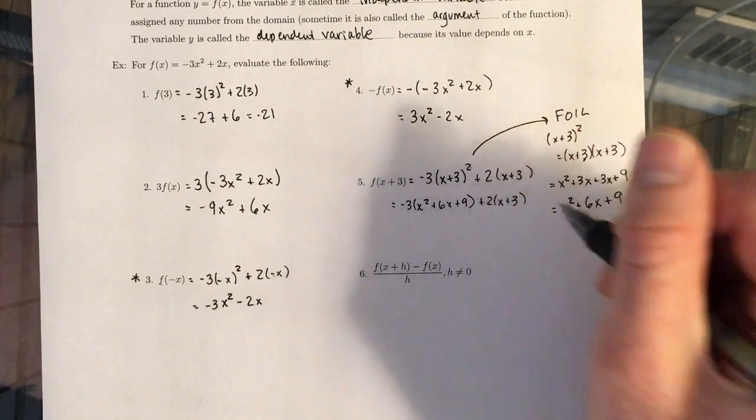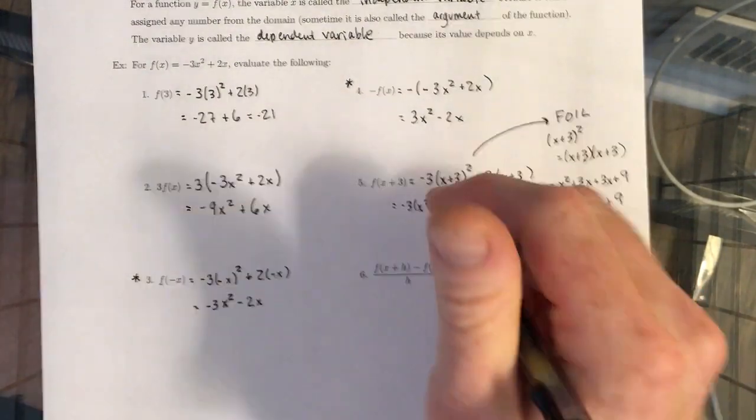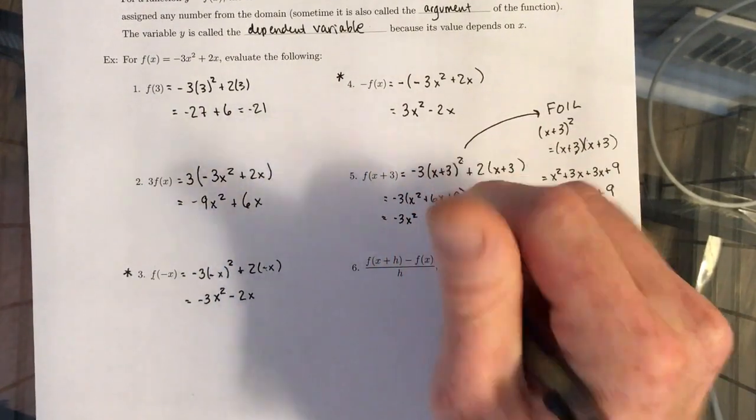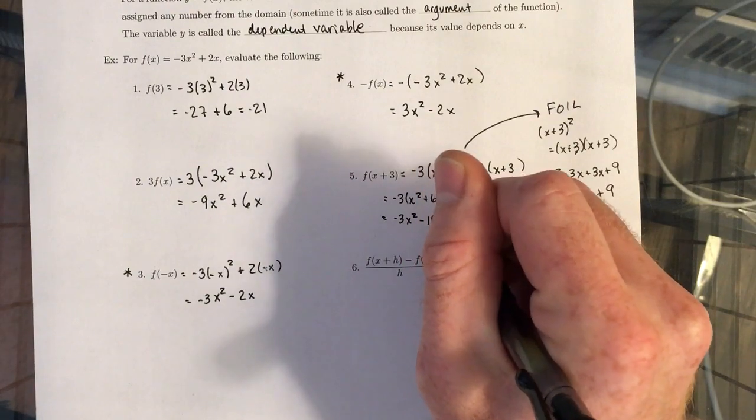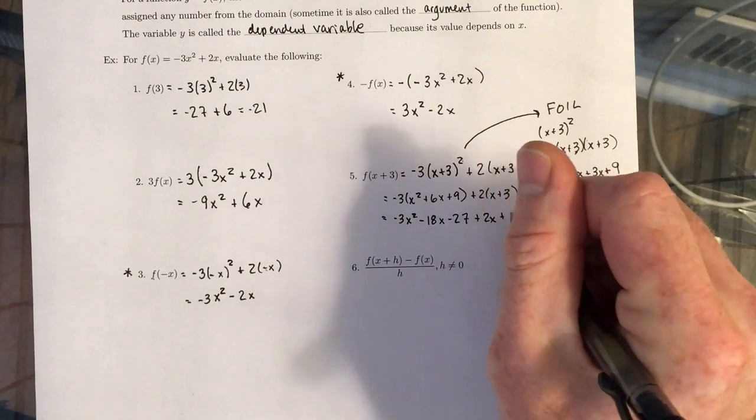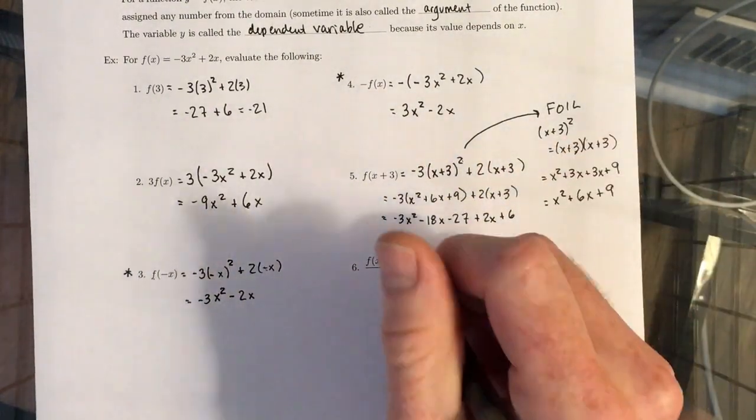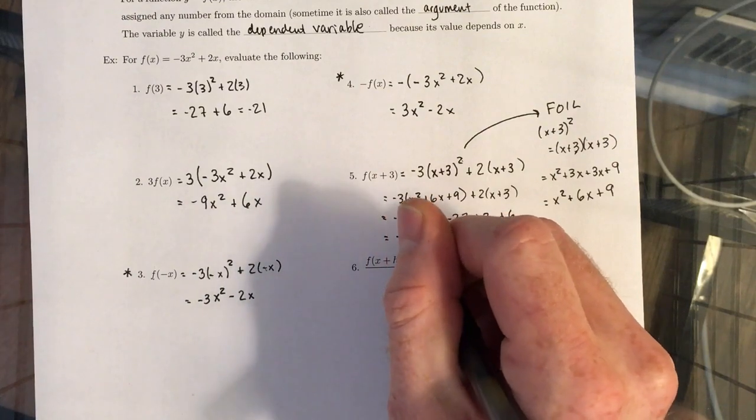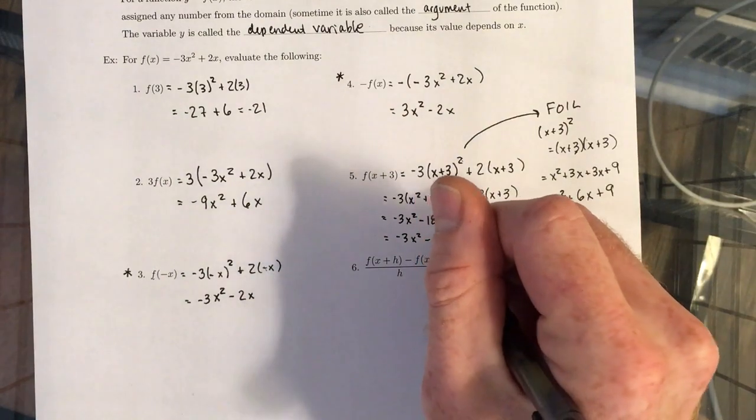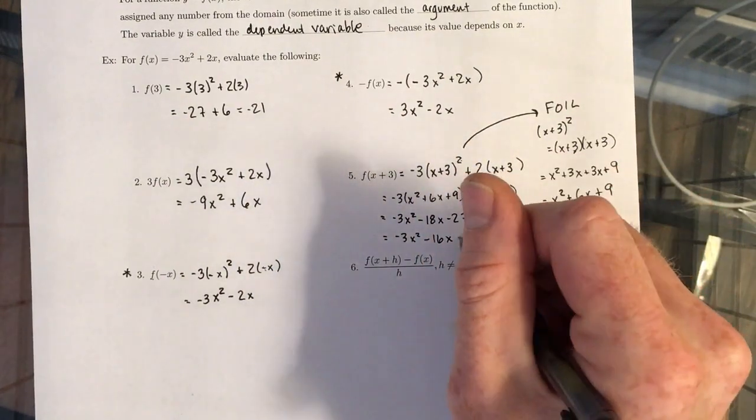And we'll take care of the distribution of the negative 3 and the 2 all in one shot. So distributing those, we have negative 3X squared minus 18X minus 27 plus 2X plus 6. And we just combine like terms. Negative 3X squared. We have negative 18X plus 2X, which gives us negative 16X. And then we have negative 27 plus 6, which gives us negative 21.